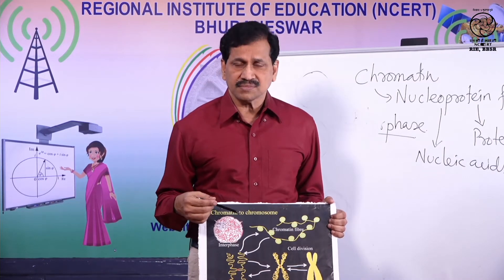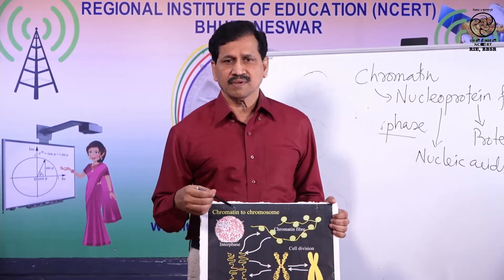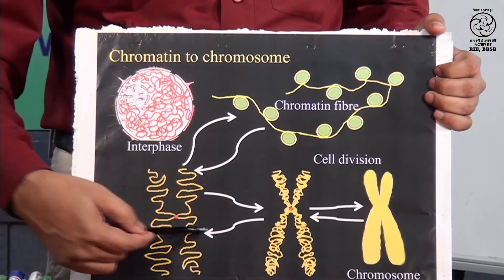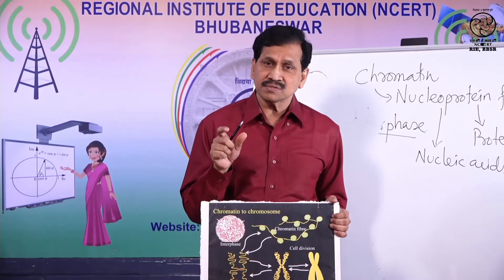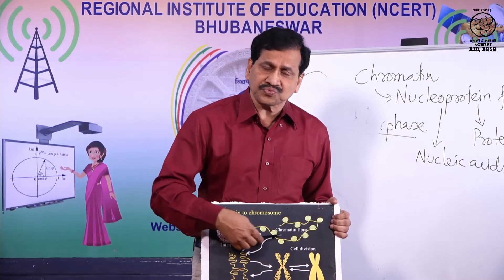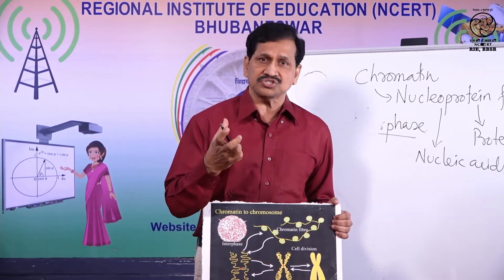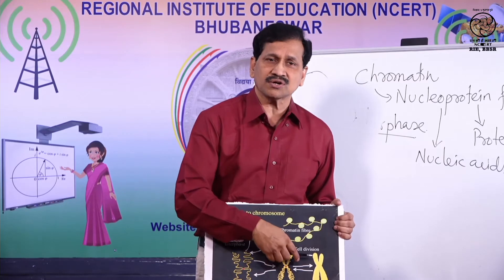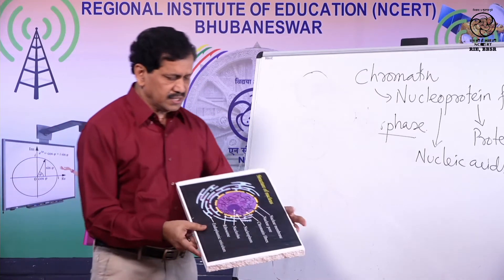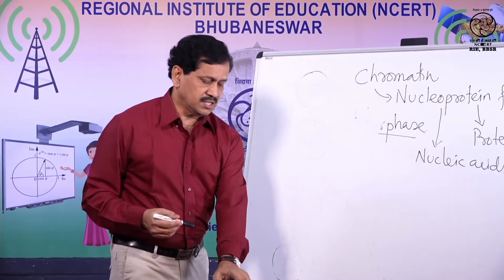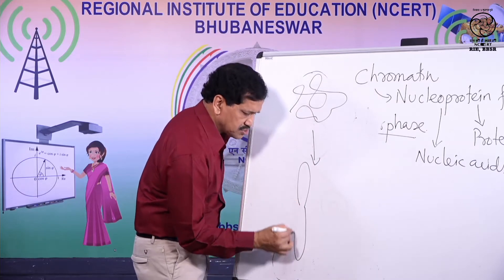During cell division, these chromatin fibers undergo condensation — they coil and become short, thick, rod-like structures which are called chromosomes. As shown in the picture, this is how condensation is going on. The chromatin fibers are the thin form, and they are becoming rod-like structures — that is, chromosomes.